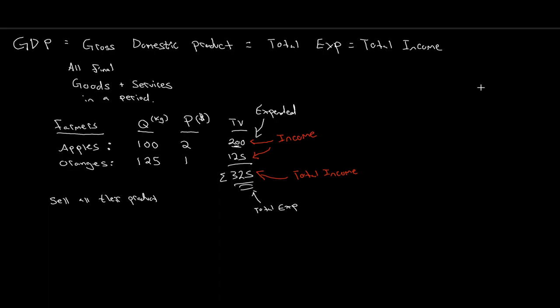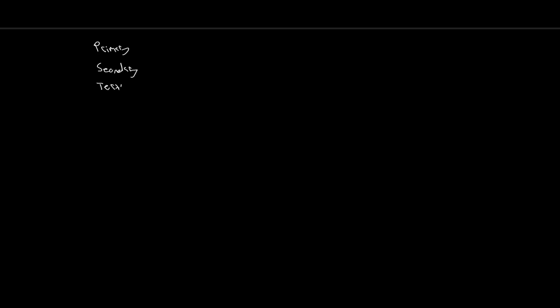The value of everything we produce within some period of time is equal to the total amount we expend on goods and services, and that total amount expended must also be the total amount of income generated. Now, what happens when we have a layered economy — a primary, secondary, and tertiary industry?